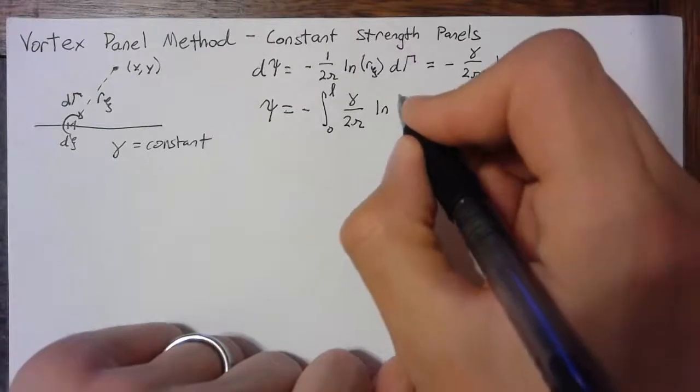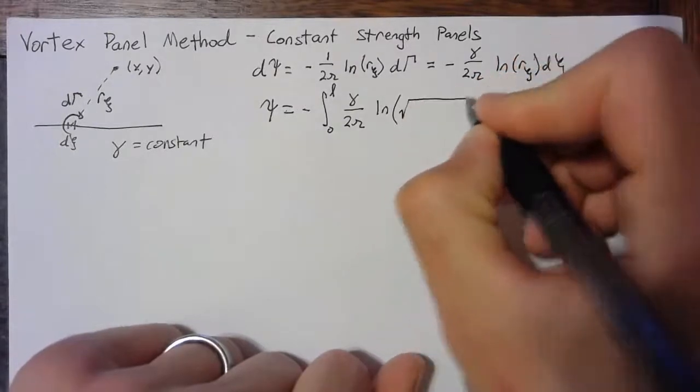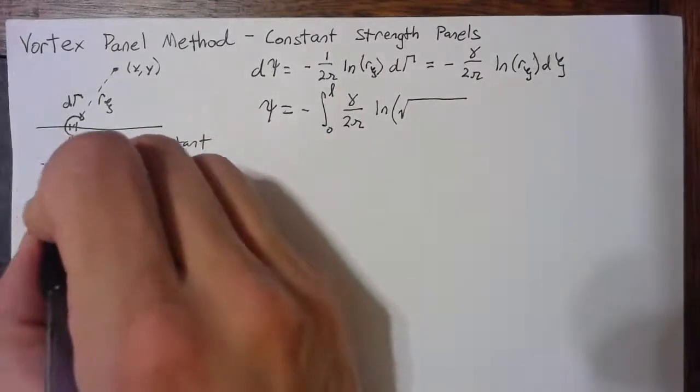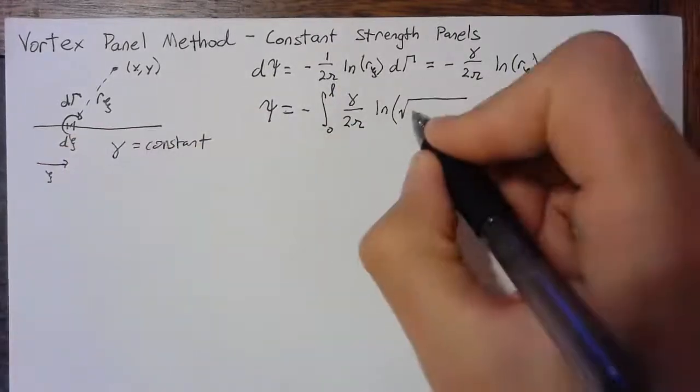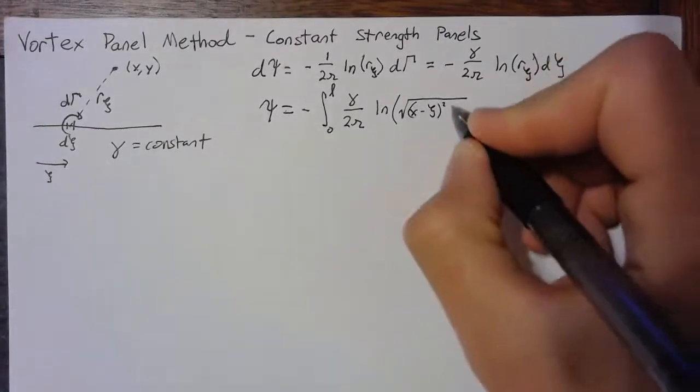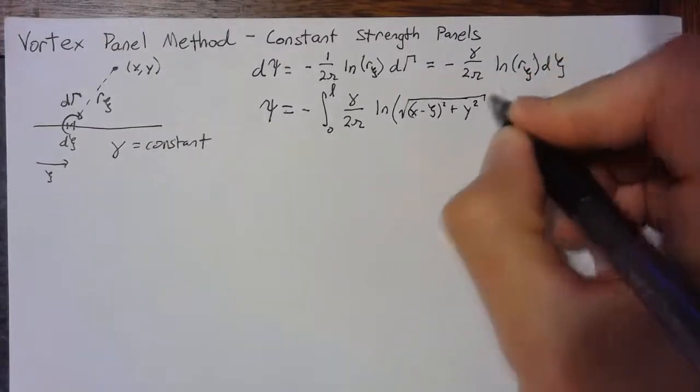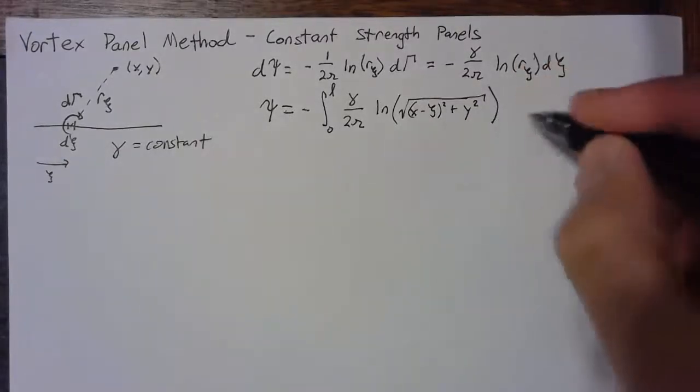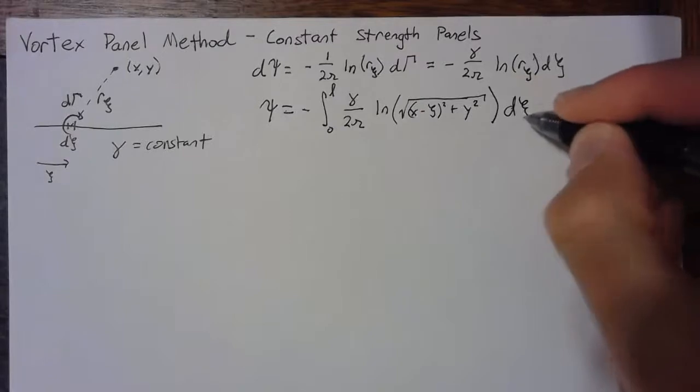This r xi is going to be the square root of x minus xi squared plus y squared, and this is all d xi.